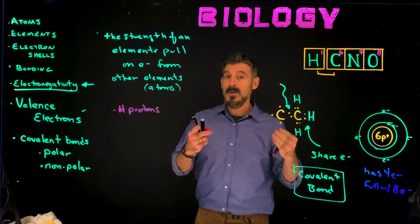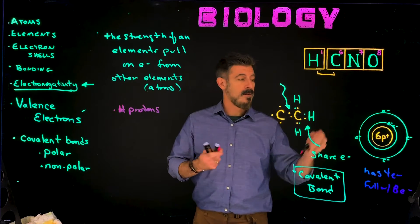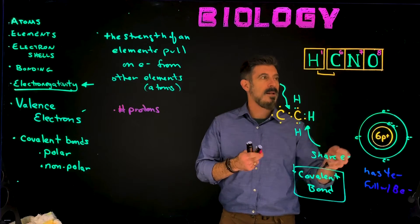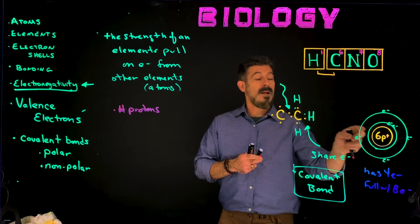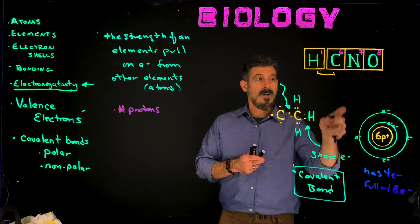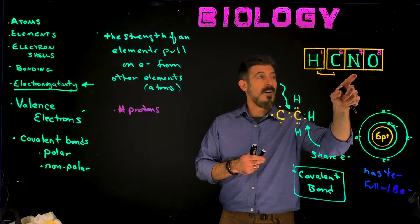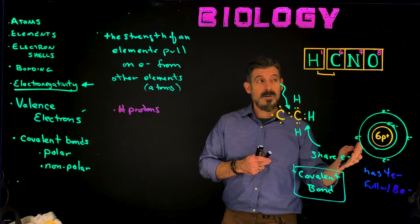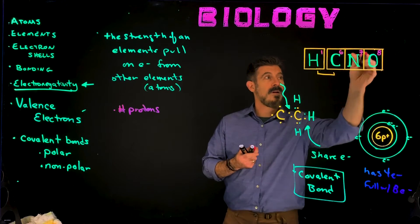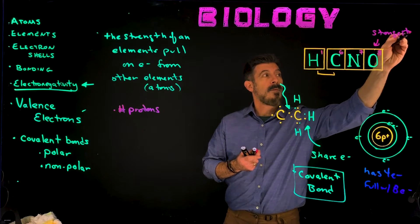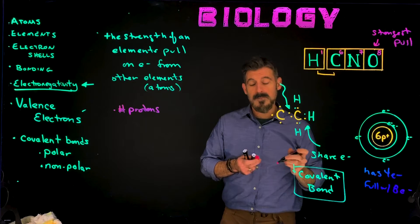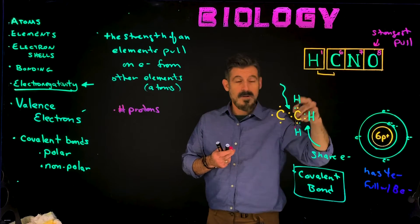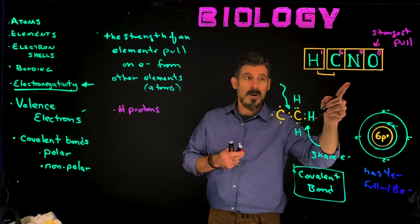If electronegativity is the pull on electrons, what is doing the pulling? Positive charge — protons. So the more protons you have, the stronger the electronegativity should be. For elements that all have two shells — carbon with four in the second shell, nitrogen with five, oxygen with six — oxygen has eight protons total in the nucleus, so it has a stronger pull. Oxygen has the strongest electronegativity of these, meaning if oxygen is sharing electrons with other elements, they won't share equally. The same goes for nitrogen versus carbon and nitrogen versus hydrogen.